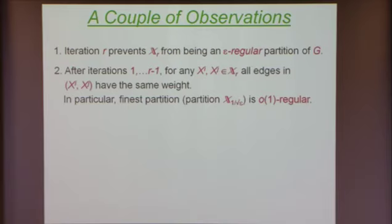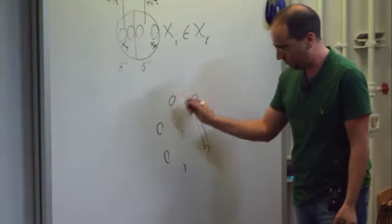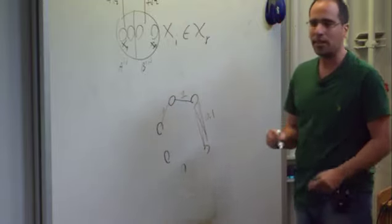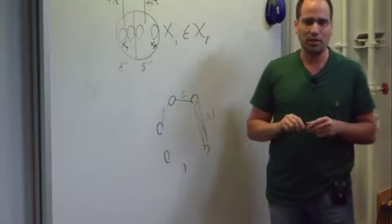That's not a problem because it's a huge partition — a partition into a tower of 1 over root epsilon many clusters. The finest partition of the graph is a 0-regular partition: epsilon-regular for any positive epsilon. So, is this finest partition the only epsilon-regular partition of the graph?